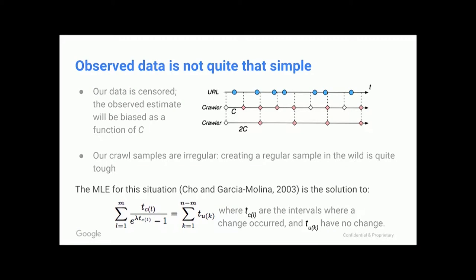It's not quite that simple, because our data is censored — we only see changes when we arrive at the page. There may have been two changes, or seven, or 156 changes in between the times we saw the page, so we'll actually introduce bias into our estimate based on how often we crawl. Our crawl samples are also irregular because people's connections are spotty and slow. You can request an update from a particular website but may only get it back 80% or 15% of the time. I think we got to about 85% regularity.